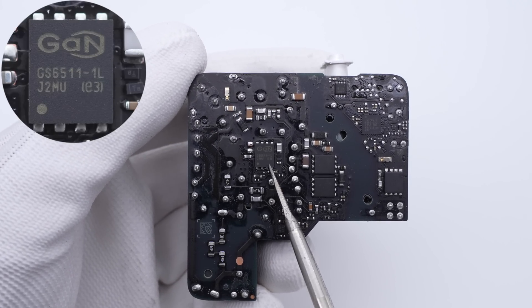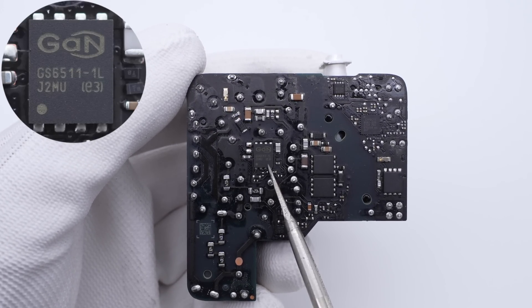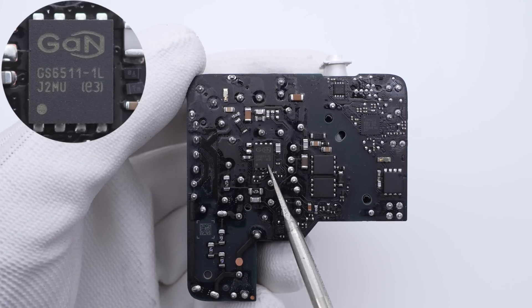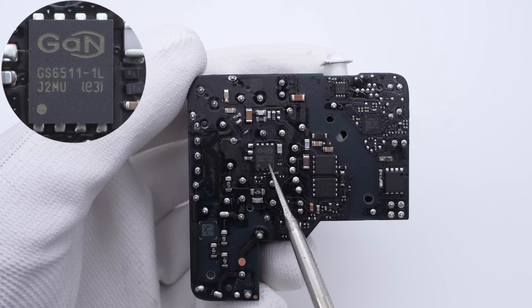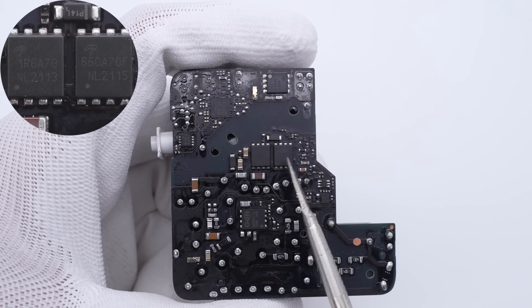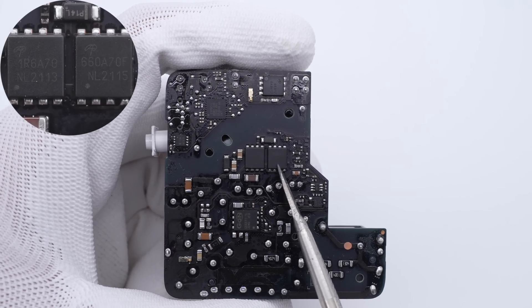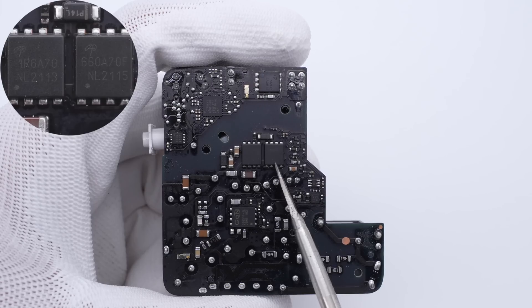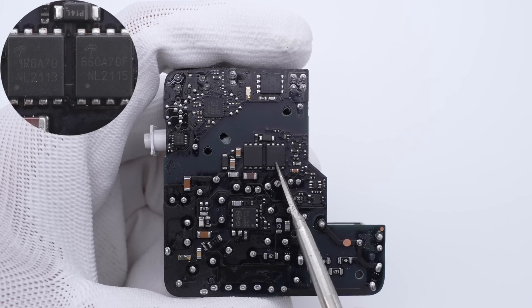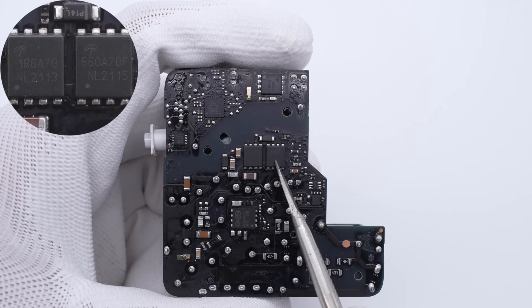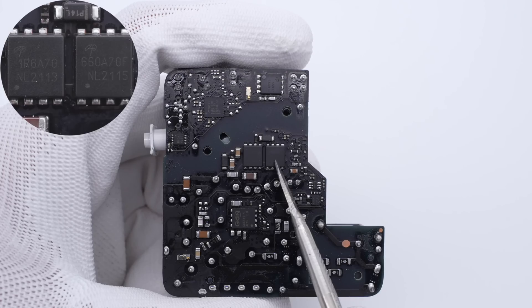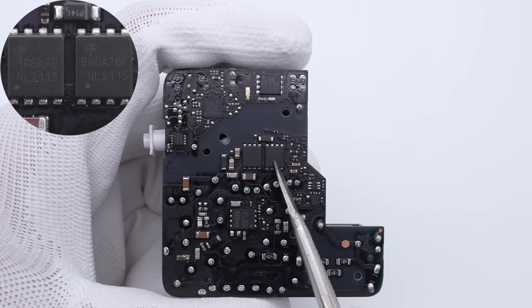Flip to the back. This is a GaN FET from GaN Systems. It adopts DFN 5x6 package and is the same model as the Apple 140W, 650V, 115mΩ. The other two MOSFETs are from AOS and adopt DFN 5x6 package, but they have different models. The left one is AONS1R6A70, 800V, 1.3Ω. The right one is AONS66A70F, 800V, 550mΩ.